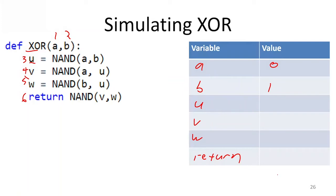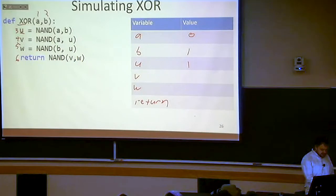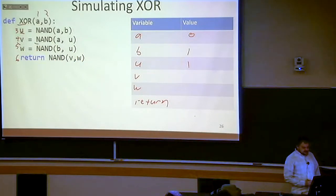The next thing we do is figure out what should the value of U be. Well, U is the NAND of A with B. So A NAND B, that is 1. Then the next thing we do is figure out V. What is V? Well, V is the NAND of A with U. So that's 0 NAND 1, which should be 1.